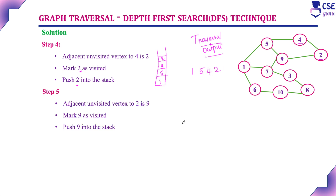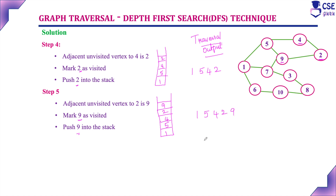Currently visited vertex is 2. The adjacent unvisited vertex to 2 is 9, because 4 is already visited. Mark 9 as visited and push 9 into the stack. The stack now contains 1, 5, 4, 2; we push 9. The traversal output is now 1, 5, 4, 2, 9.